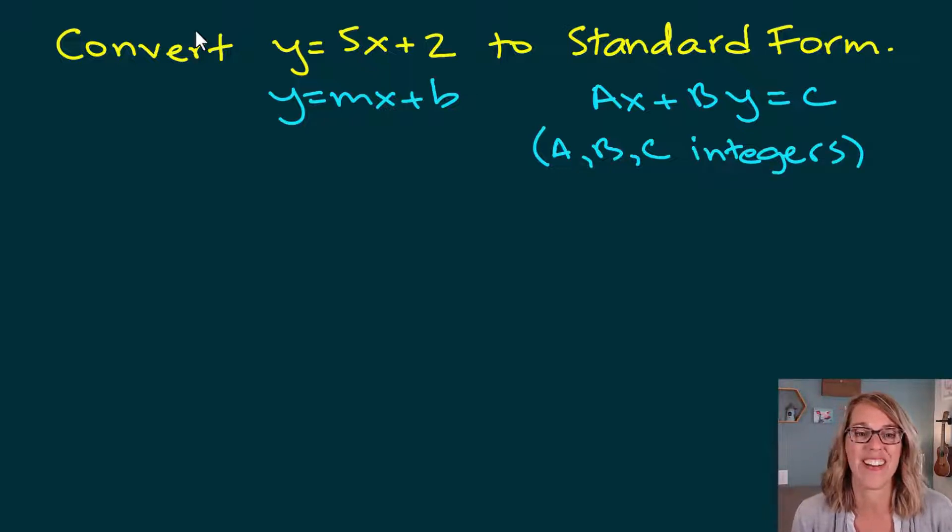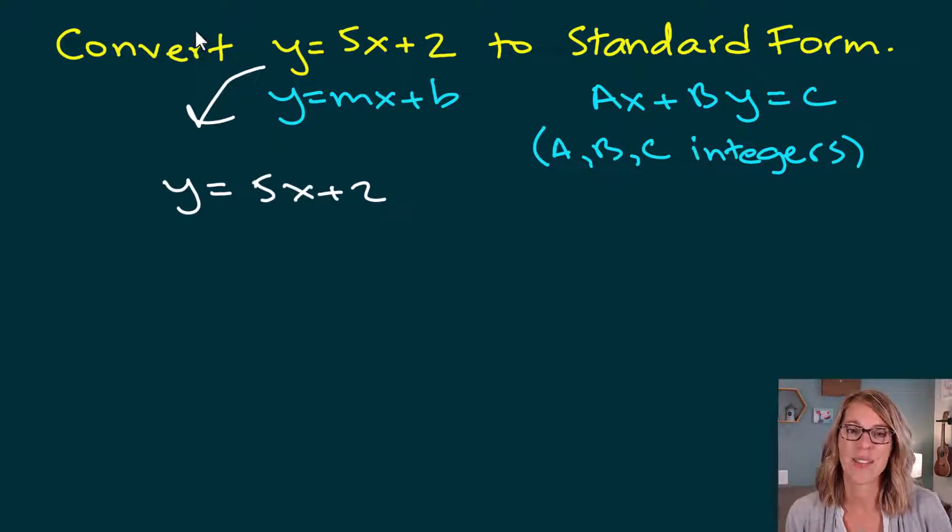Let's start working on this one. So first of all, I need all of my x's and y's on the same side. So I've got y equals 5x plus 2. Let's subtract the 5x so we can move it to the other side. So minus 5x minus 5x.